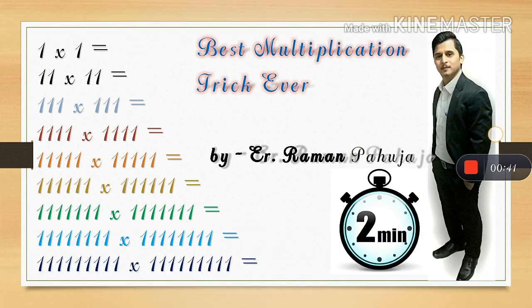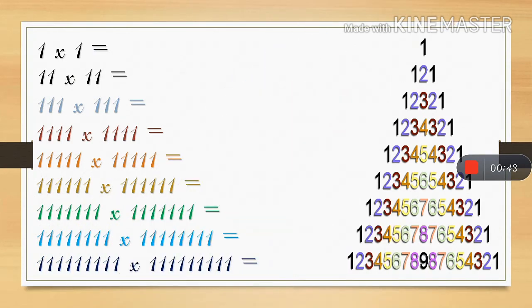For example, we are calculating 4 times 1 × 4 times 1. So remember how many digits we are calculating: 1, 2, 3, and 4. So our answer will be 1, 2, 3, and 4. And after 4 we will just do the opposite of that like 3, 2, 1. So our answer will be 1, 2, 3, 4, 3, 2, 1.